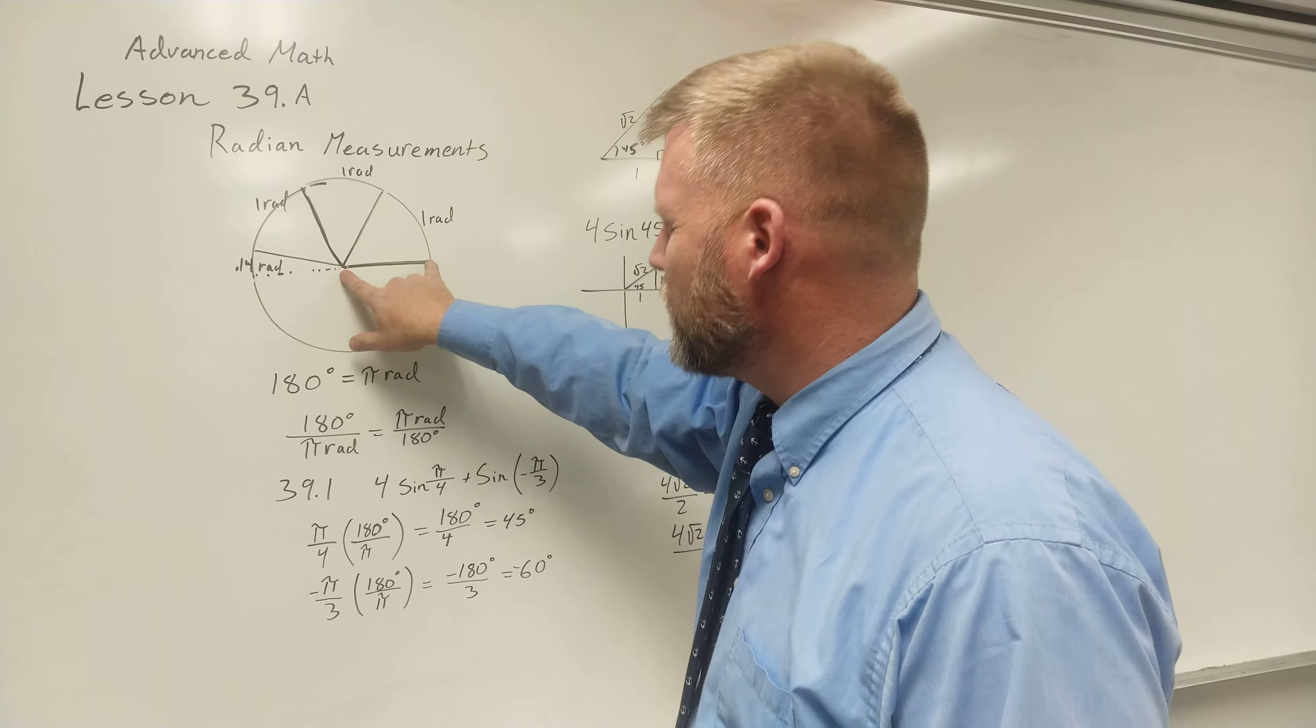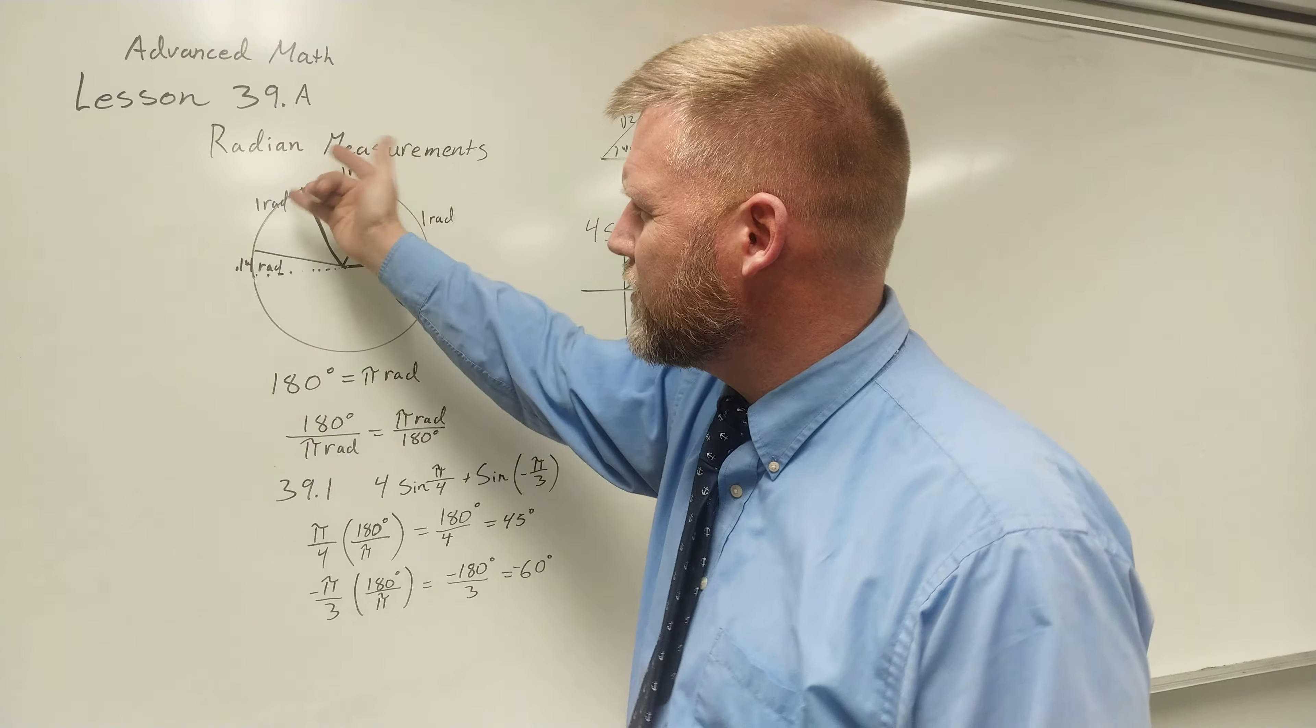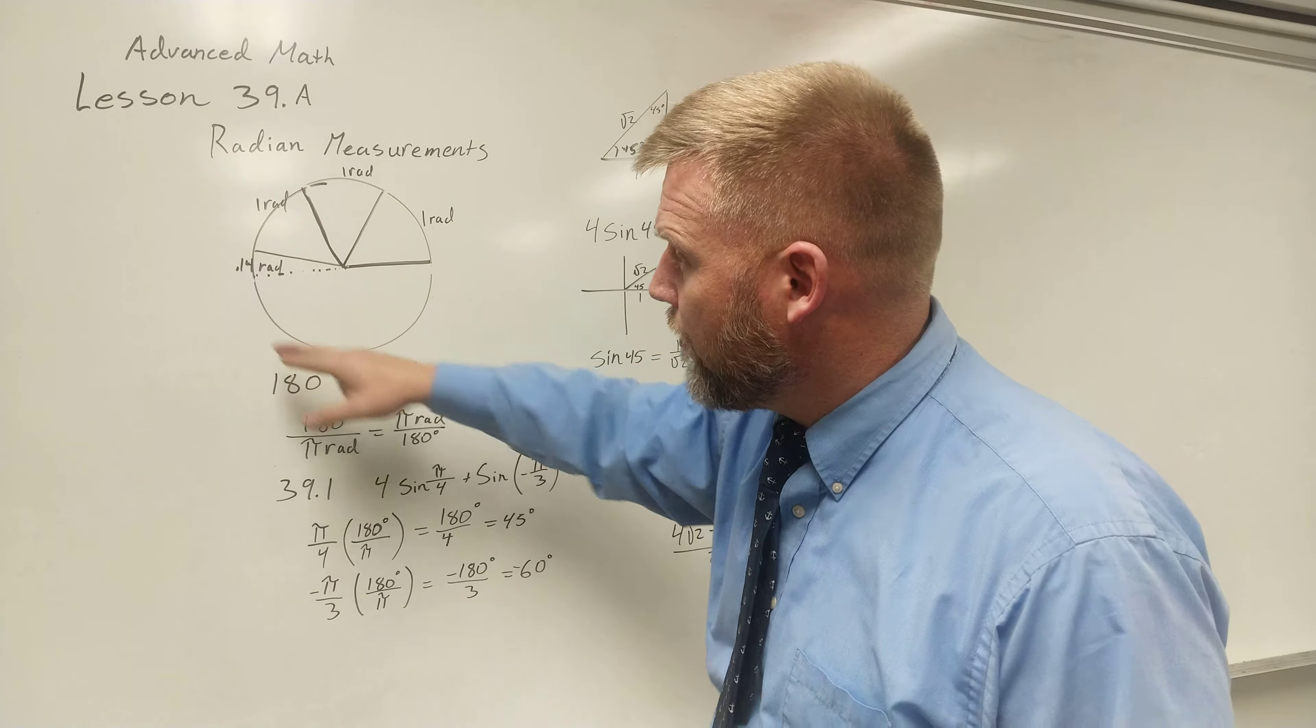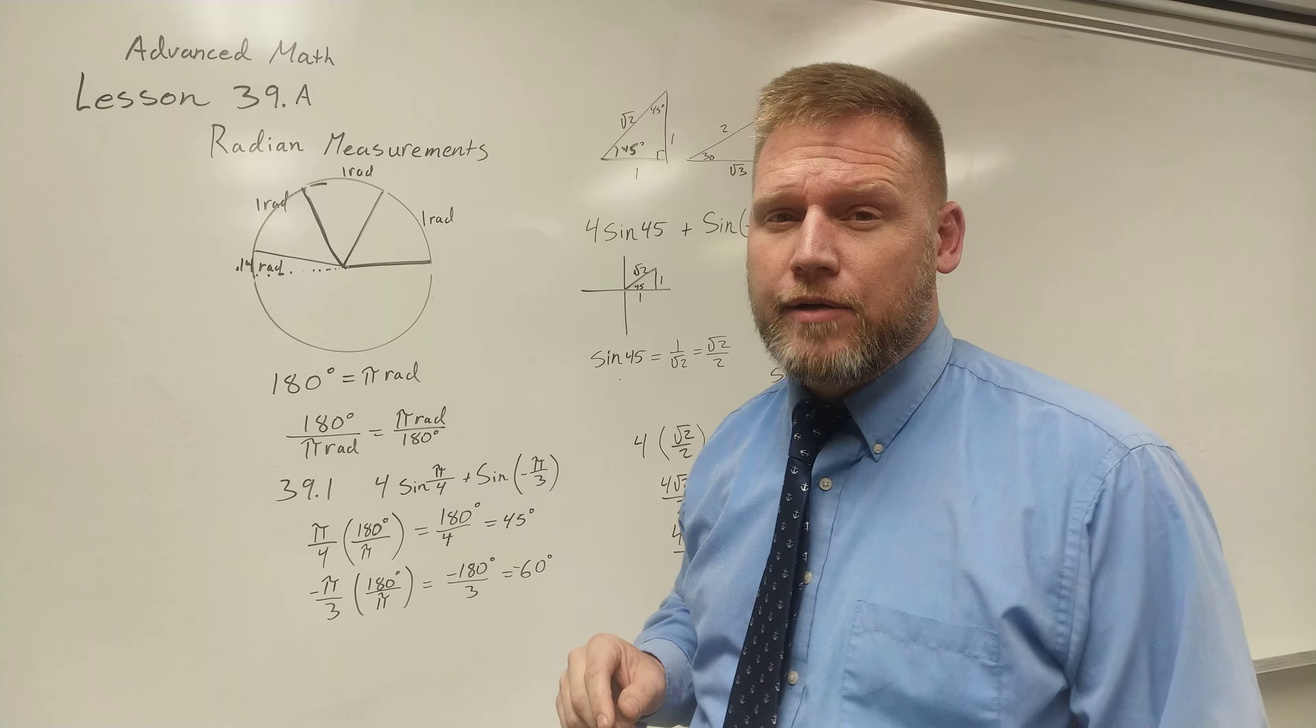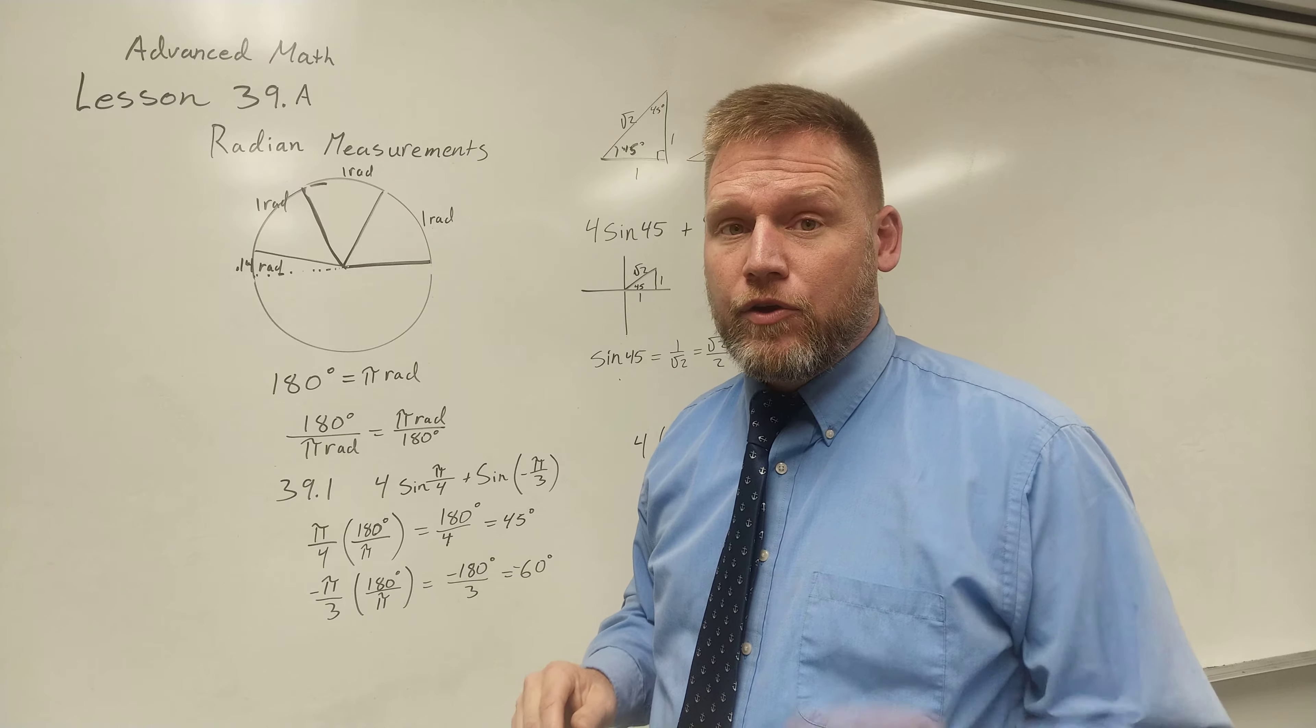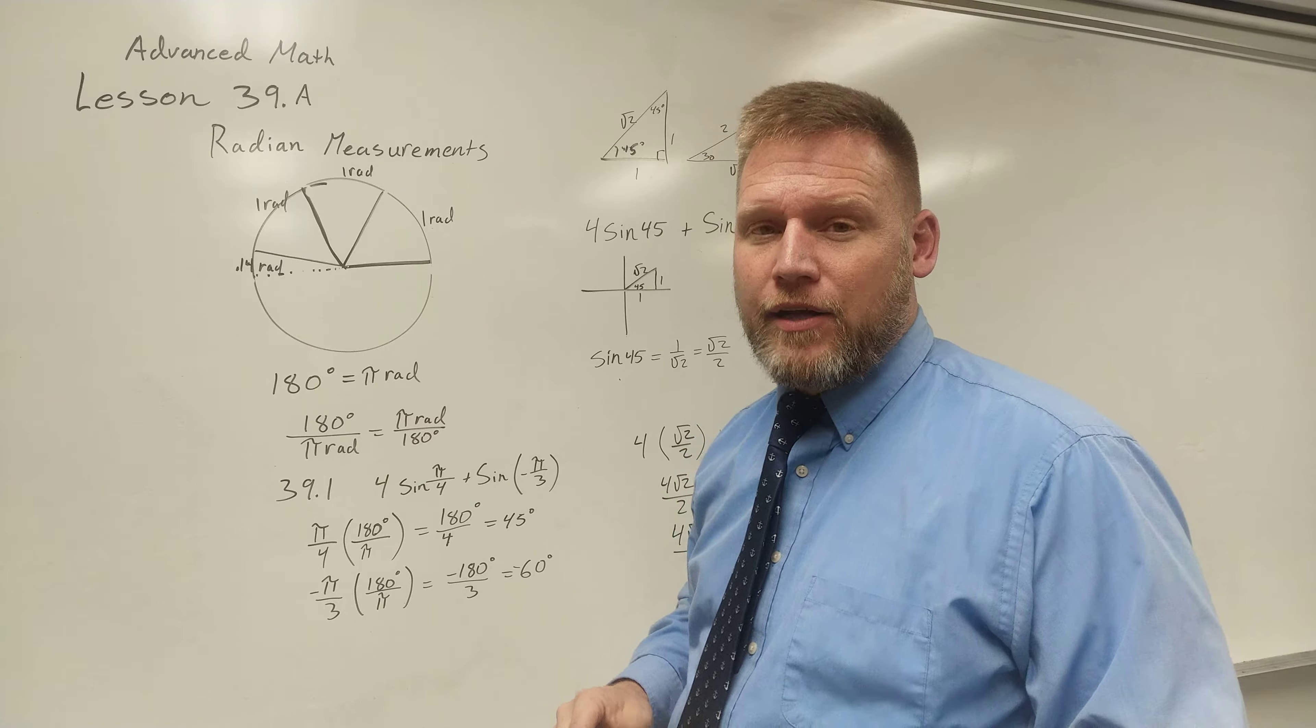But really, if I come from the center of the circle to the outside and I lay it on the outside each time, it ends up being taking all the way around 6.28 times. So halfway around is 3.14, and the Greeks went ahead and labeled that as pi.